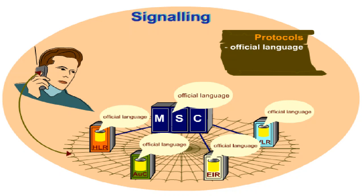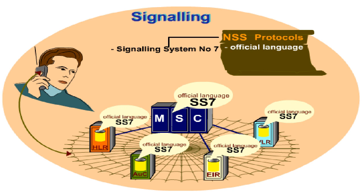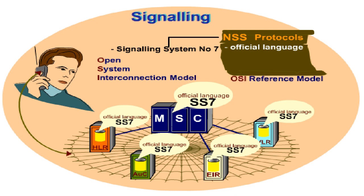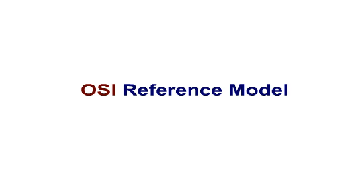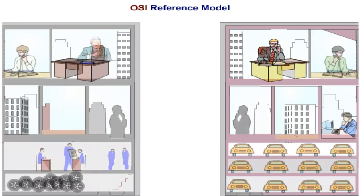The protocol used in the network subsystem, NSS, is called Signalling System Number 7, or SS7. SS7 is based on the Open System Interconnection model, also called the OSI reference model. We'll now illustrate in general terms the OSI reference model with an example from business life.